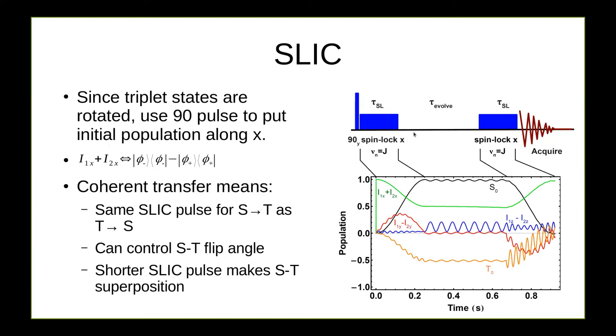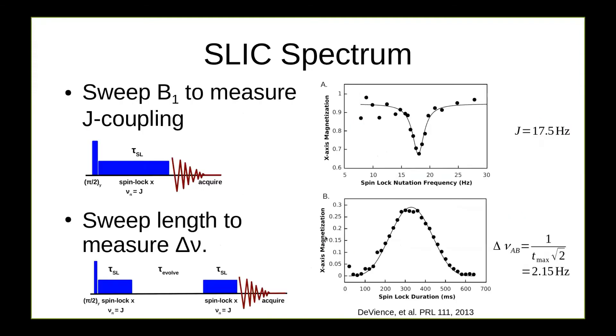Now, since these triplet states are rotated, as Constantine mentioned, we need to have polarization along the x-axis first. So we need to do a 90 degree pulse before this spinlocking. Ix plus I1x plus I2x is simply this population difference between these triplet plus and triplet minus states. And here's a simulation of what happens when we turn on spinlocking. So we now get a coherent and direct transfer between the x-magnetization and we get built up into the singlet stage. The nice thing about this is that the slick pulse works the same way backwards because it's coherent. So if I do it again, I can get coherent transfer back out of singlet back into x-polarization. Another nice thing is that we can control the length of this pulse. So we can control the flip angle just like we would do with regular NMR. And we can use a shorter pulse to make, for example, singlet triplet superposition.